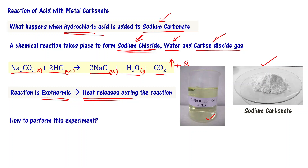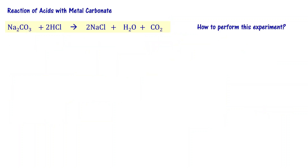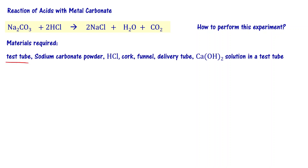How do we perform this experiment in the laboratory? We need a test tube, some sodium carbonate powder, and dilute hydrochloric acid. We also need a cork with two holes — one for inserting a funnel to pour HCl into the test tube, and one for a delivery tube through which the carbon dioxide gas escapes.